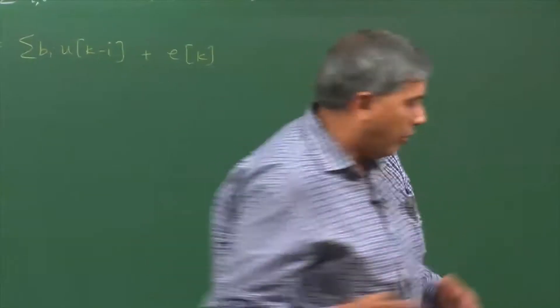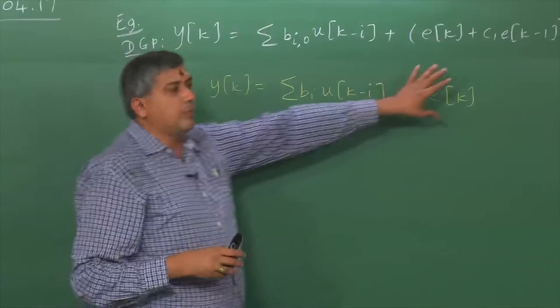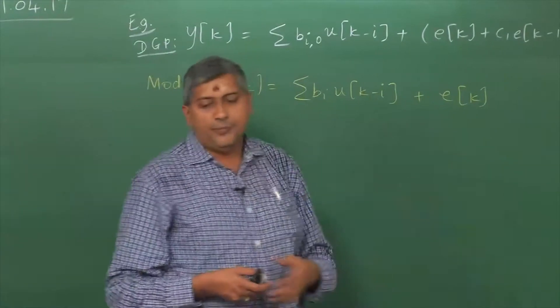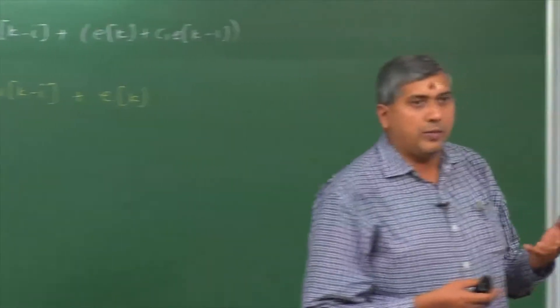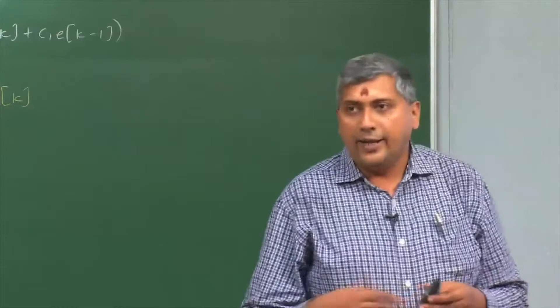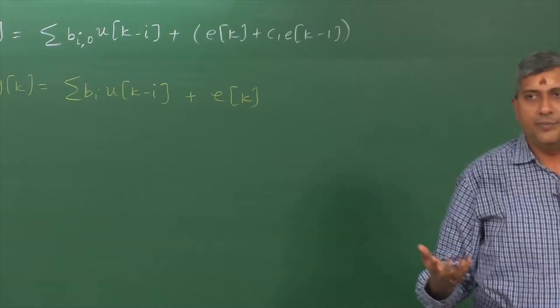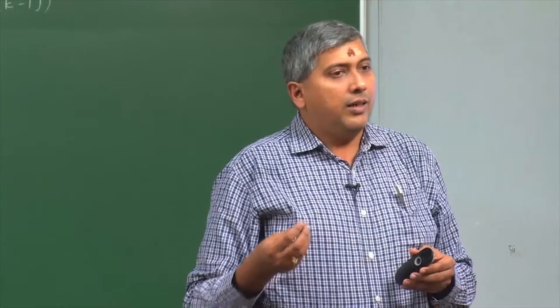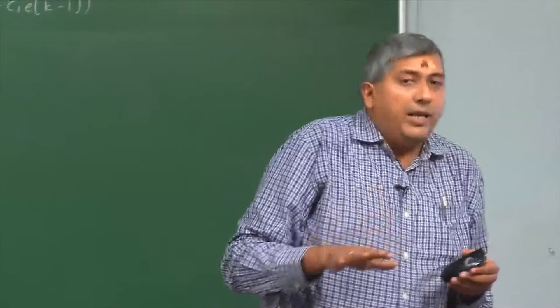But efficiency is not guaranteed, because least squares estimators are efficient only when the residuals are white. If you assume EK to be white and set up your least squares problem to estimate your Bs, whatever is left over after estimation will not be white, because the data generating process is not generating data that way. The residuals are going to be colored. As long as they are uncorrelated with the regressors, consistency is guaranteed, but efficiency is not.